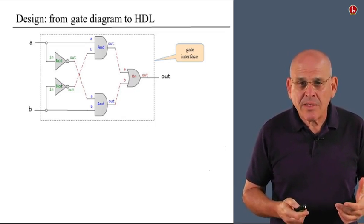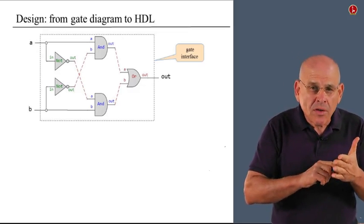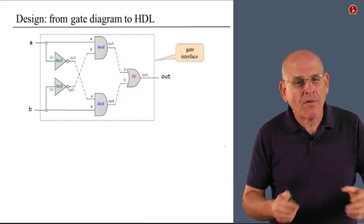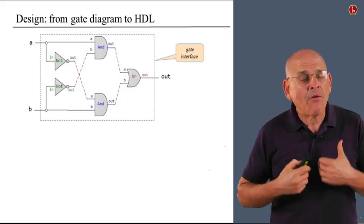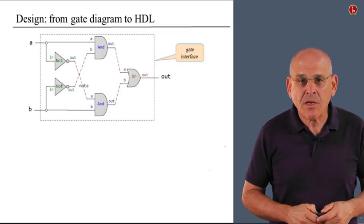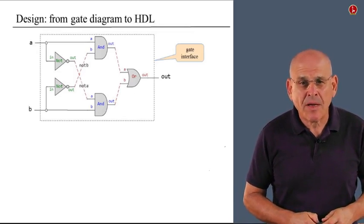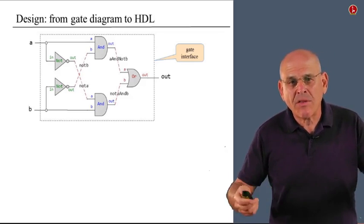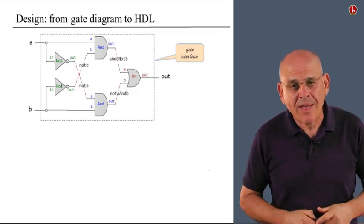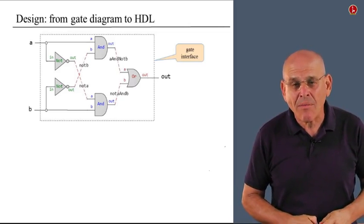Now, the next thing that we do is let's focus on the red connections that we see here. These are the connections that we draw in order to connect the different chip parts together. The rule is that every one of these connections has to be named. And it's our responsibility to come up with sensible names. So that's what we do. We can call this particular connection notA, which is a sensible name, a self-descriptive name. We'll do the same thing with notB. We can call this one AandnotB. We can call this one notAandB. And that's it. We have named all the internal connections in our architecture. And we can actually now move on to describe this diagram in HDL.